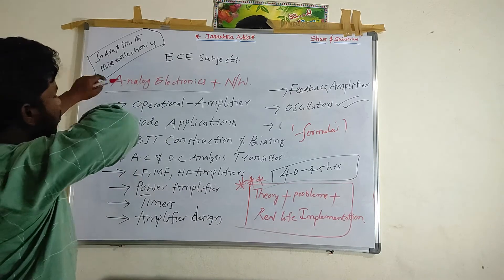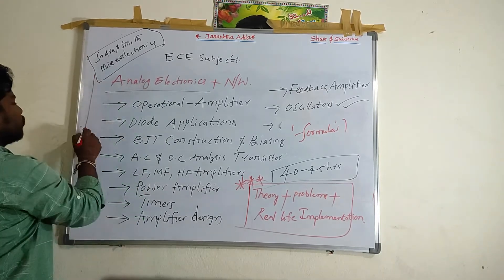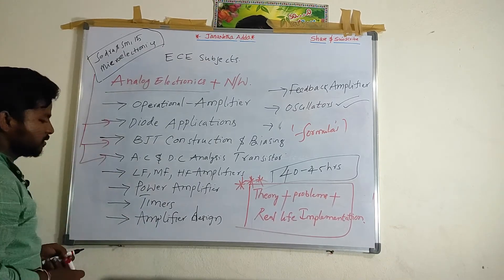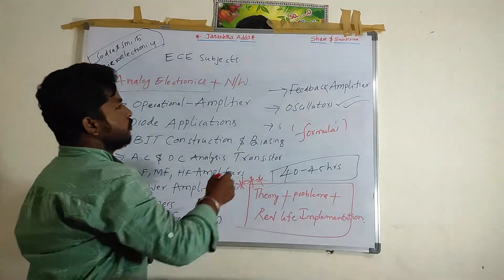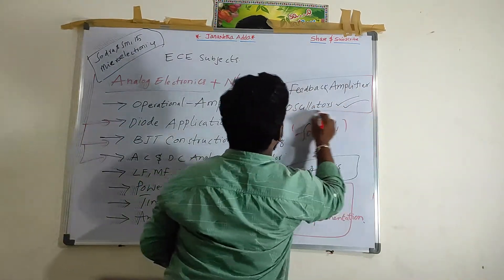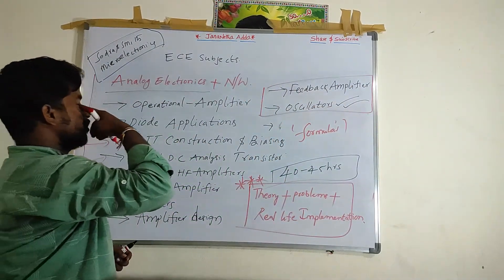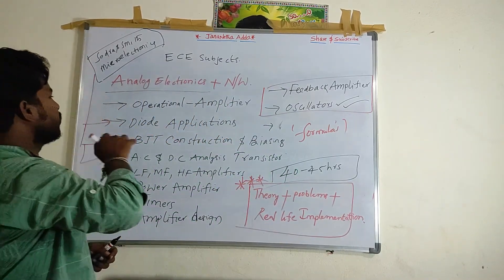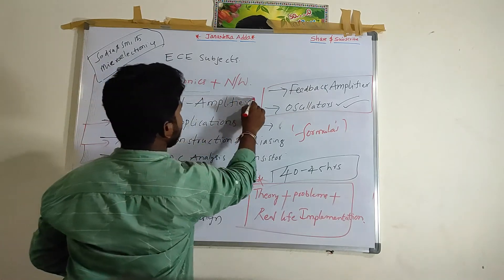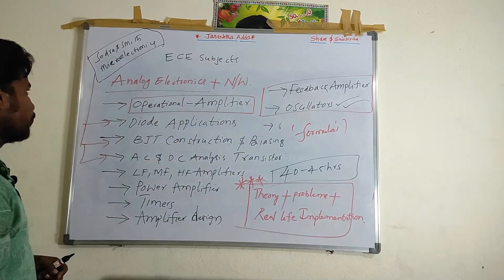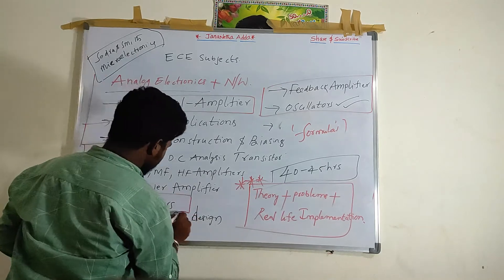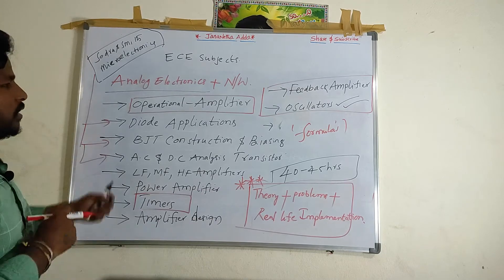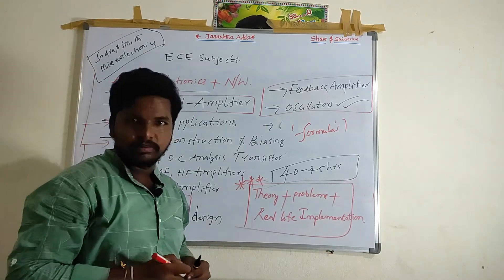This Sedra and Smith book is very good for Diodes, BJT construction, AC and DC analysis, and also for feedback amplifiers and oscillators. For Operational Amplifiers, there is another separate book that only focuses on amplifiers and timers. When the time comes, I will provide that reference to you and solve as many problems as possible from Analog Electronics.